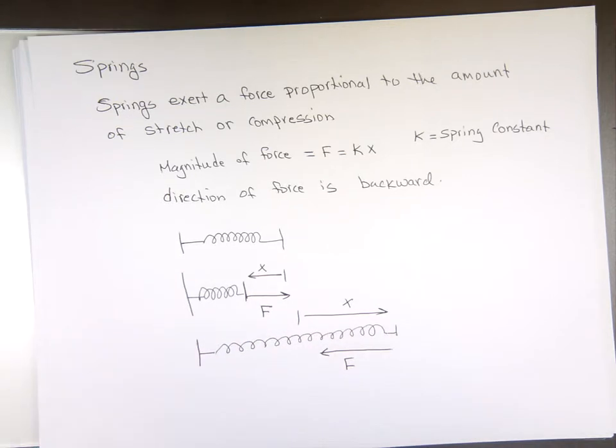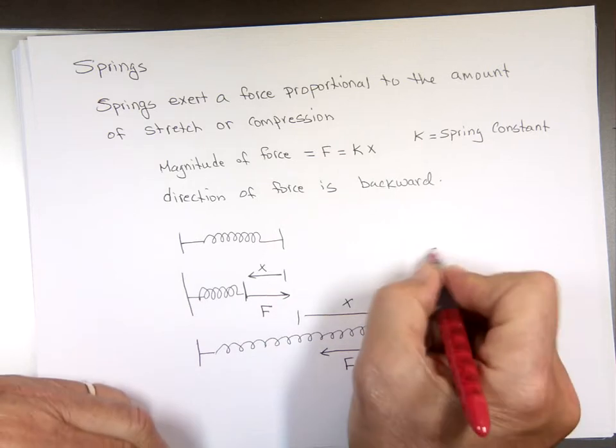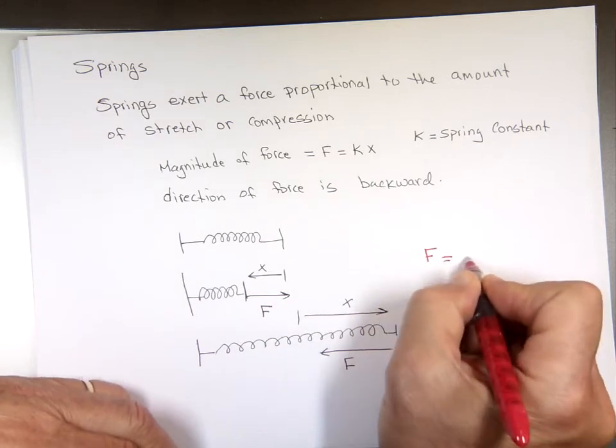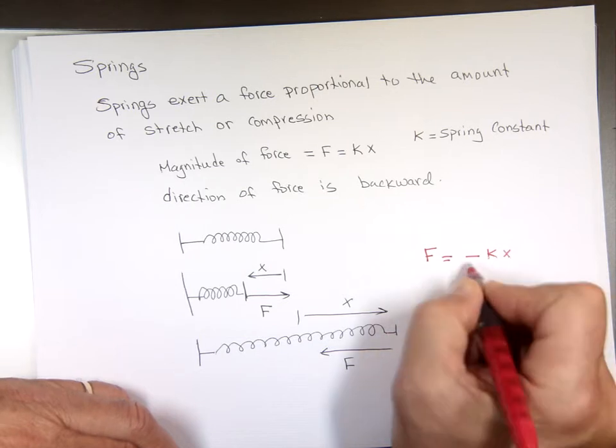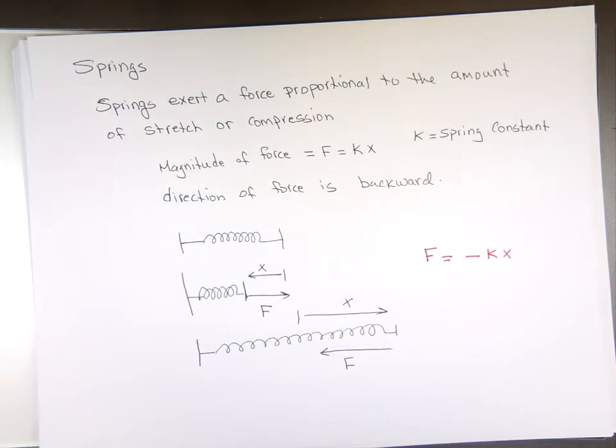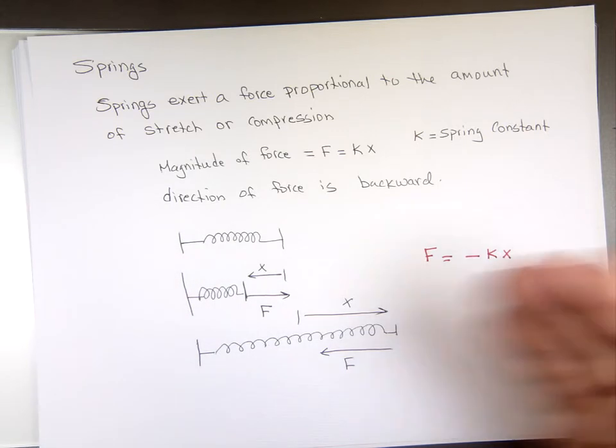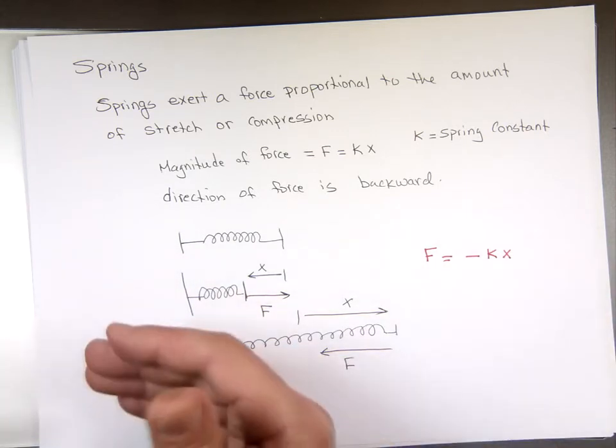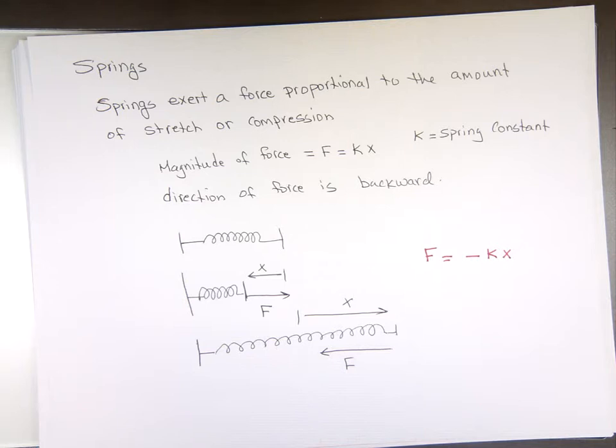So notice F is always backward to X. So the way we write the equation for a force of a spring, we go F equals negative K times X. The negative tells us the direction. So if X is positive, X to the right, the force to the left. If X to the left, the force to the right. It's always backward.